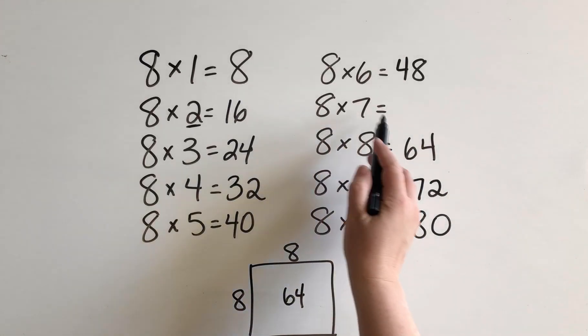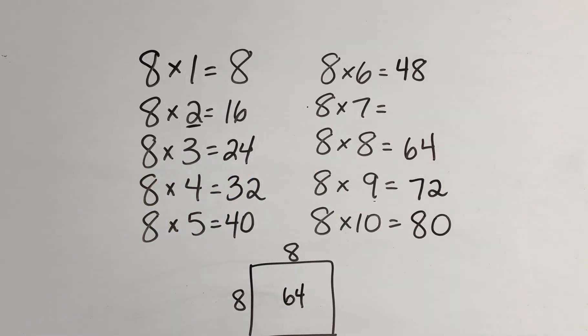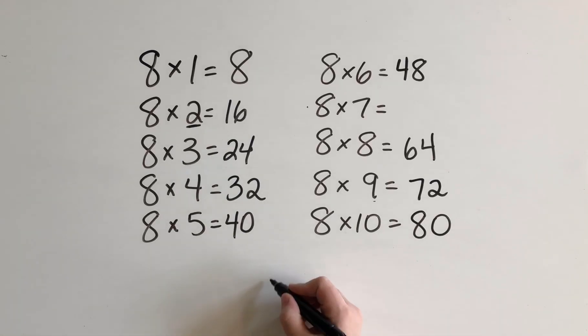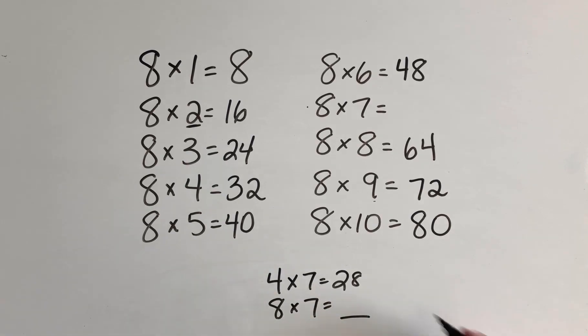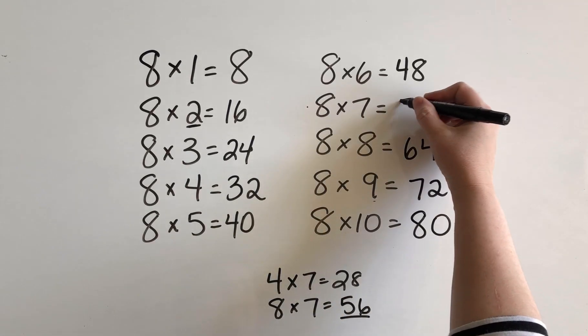And then for 8 times 7, this one is sometimes a tricky fact, but let's think about what we could do for this one to figure it out easily. So what do I know? Well, I know that 4 times 7 is 28. I remember that fact. So 4 groups of 7 makes 28. So 8 groups of 7 is going to be double, isn't it? Because I'm doubling the amount of rows. So what's the double of 28? That's 56. So that's how I thought of this one this time.